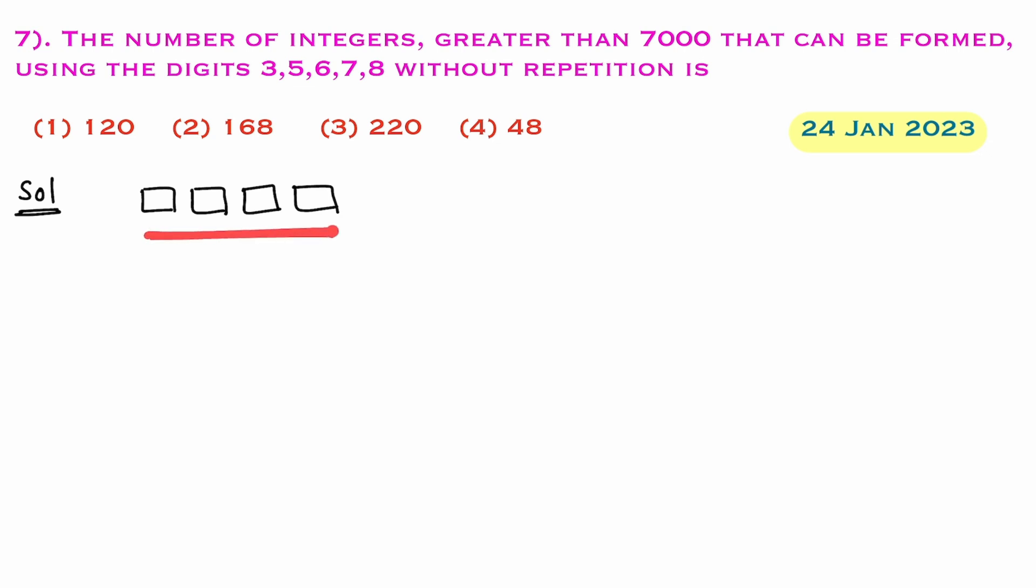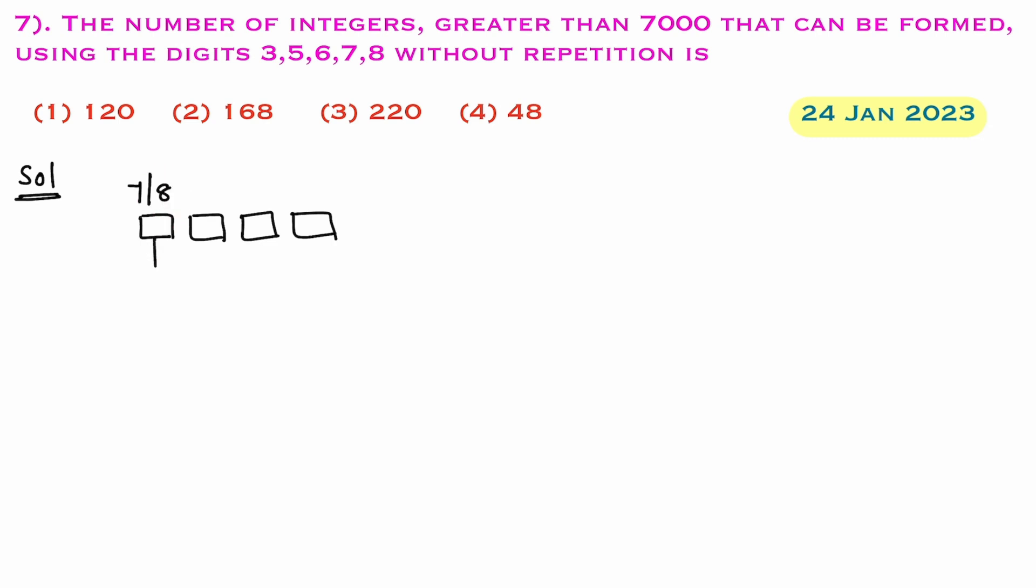First, I'll find four-digit numbers which are greater than 7000. To form a four-digit number greater than 7000, the first box can be filled in two ways only. As we need to get a number greater than 7000, you cannot write 3 here. If we write 3 here, it is a number less than 7000. So first box can be filled in two ways: I can write 7 or 8.